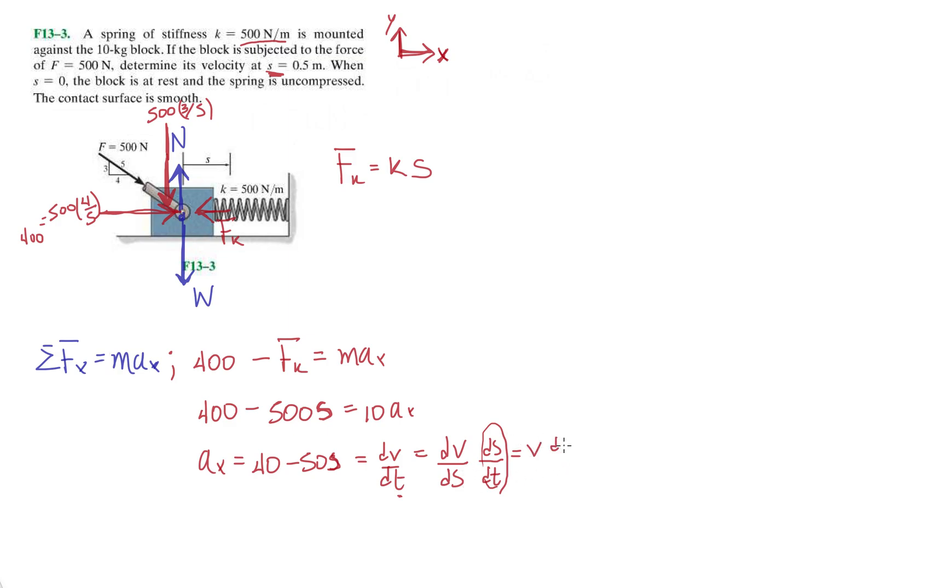So then from here, we can say dS dt, that's just the velocity. And then dV dS, that's what we're interested in. So now we have our final differential equation to solve, equals V dV dS. Now, I have to put the correct terms on each side.